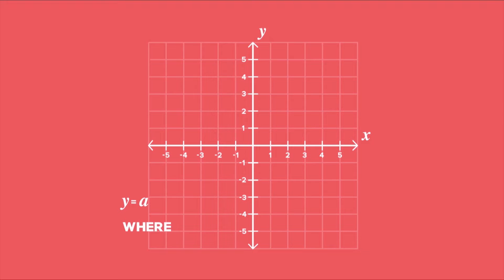When y equals a, where a is an element of real numbers, we get the equation of a horizontal line perpendicular to the y-axis and parallel to the x-axis. The gradient of this line will be 0. For example, y equals negative 2.